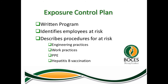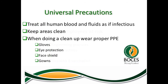The district is responsible for having an exposure control plan — a written program that outlines which employees are at risk and describes procedures for those employees, including engineering practices, basic work practices, personal protective equipment, and any hepatitis B vaccination being offered. Regarding universal precautions: practice hand washing and treat all human blood and fluids as if they are infectious. If you are doing a cleanup of an incident, make sure you wear gloves and personal protective equipment.